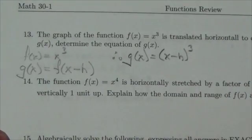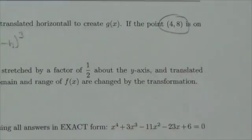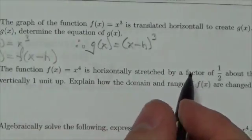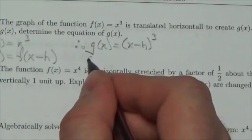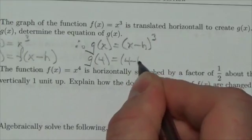However, we're told one other thing. We're told that the point 4, 8 is on that transformed function. So, I've got g of 4. If I plug that in, I'm going to get 4 minus h cubed.